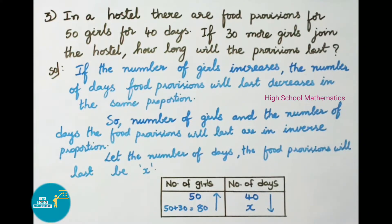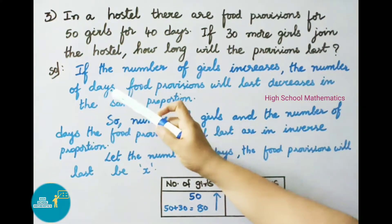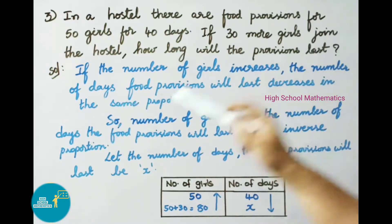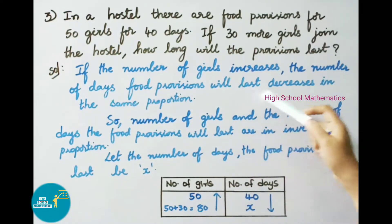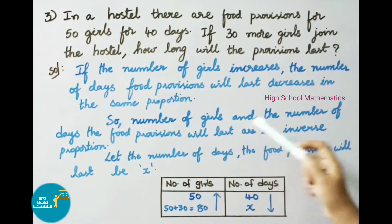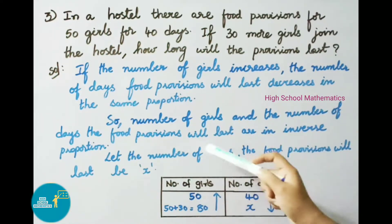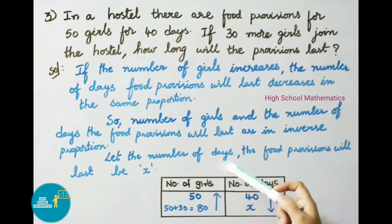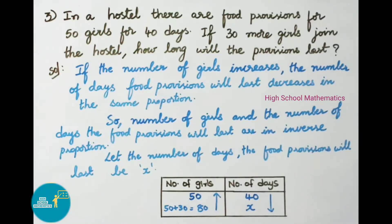The number of days will be decreasing. If the number of girls increases, the number of days food provisions will last decreases in the same proportion. So number of girls and number of days the food provisions will last are in inverse proportion. Let the number of days the food provisions will last be x.